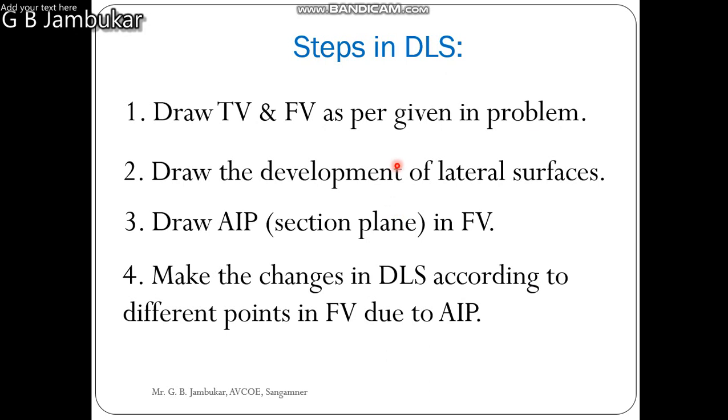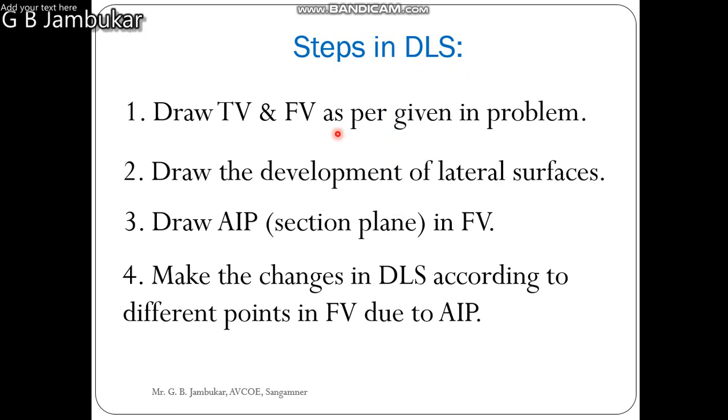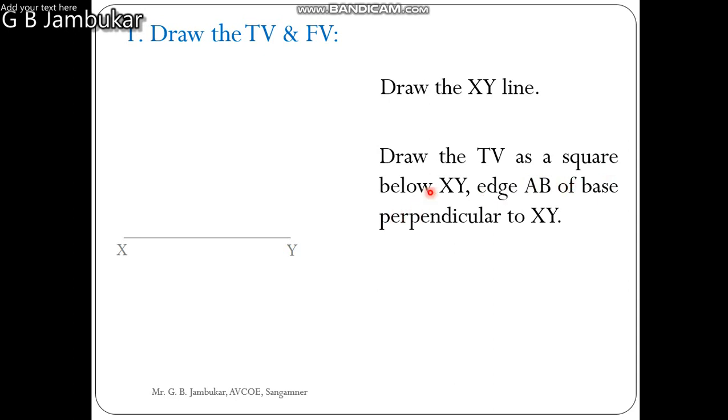There are 4 steps in drawing of the development. We see one by one. First step is drawing of the front view and top view. Draw the XY line, below the XY draw the square while drawing the AB perpendicular to XY. Edge AB is perpendicular to XY. By joining opposite corners, we get the center.